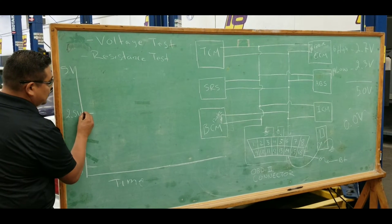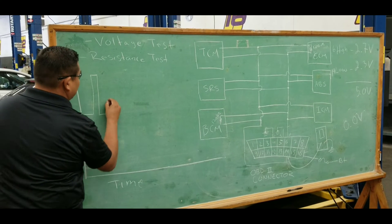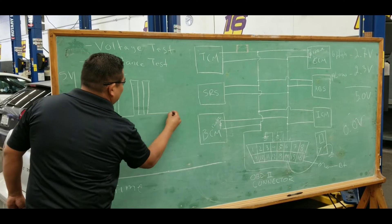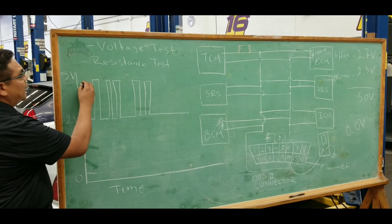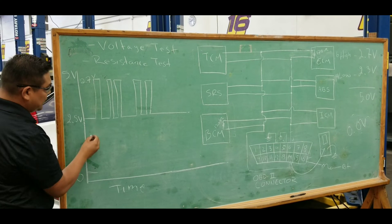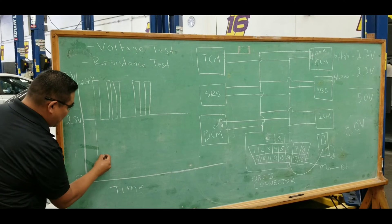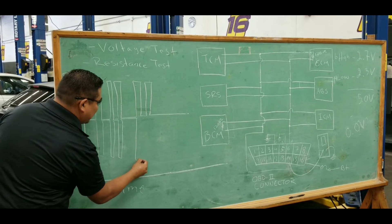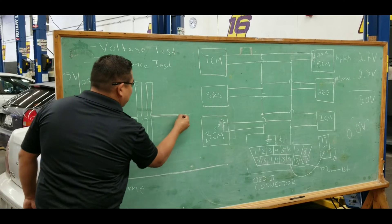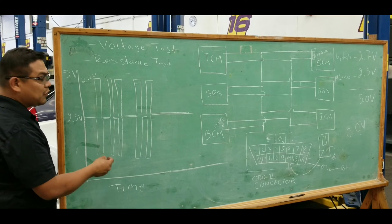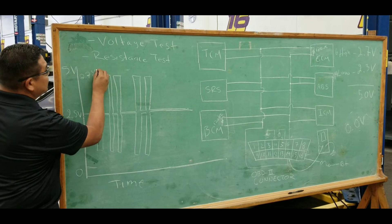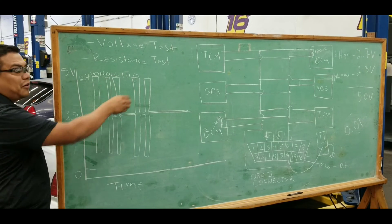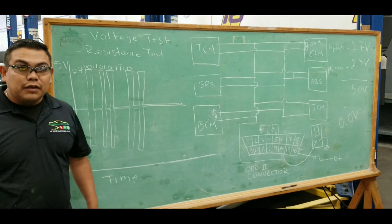If the network is working properly, you want to see a waveform. The high side will switch from around 2.5 up to about 2.7 volts. The low side will switch from 2.5 down and it will mirror the high side. That is your communication network — that's your binary code, representing your 0-1-0-1-0.